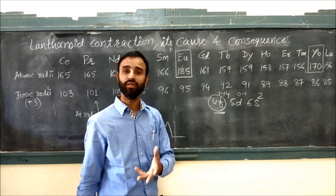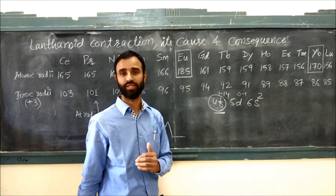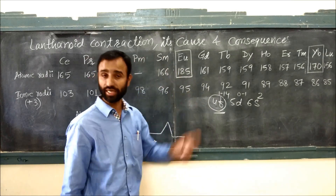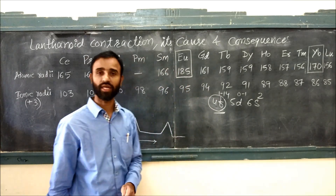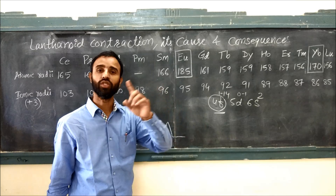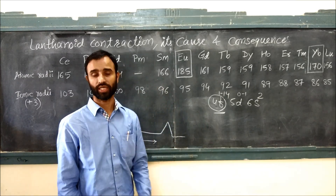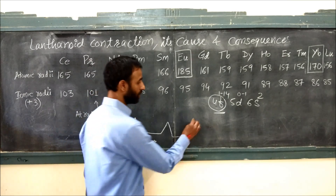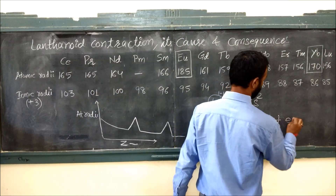Comparatively, the decrease in size is less. This steady decrease in size of lanthanoids as their atomic number increases is known as lanthanoid contraction, and its cause is poor shielding of 4F electrons.